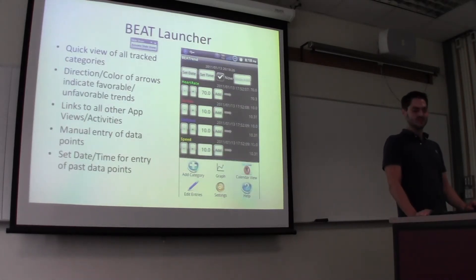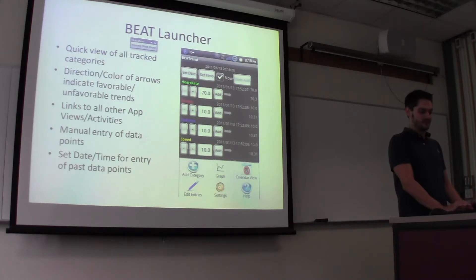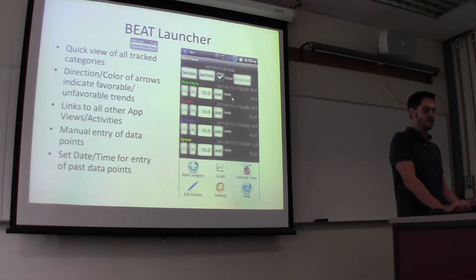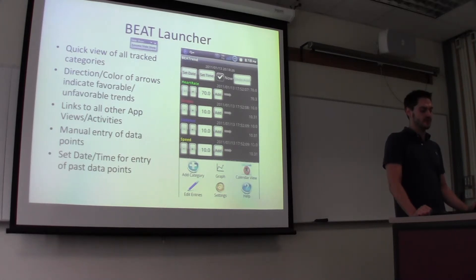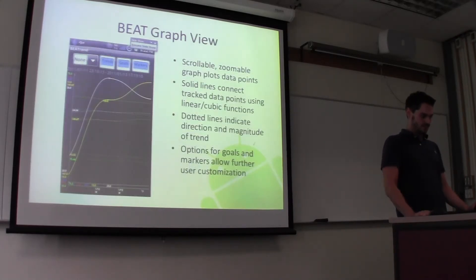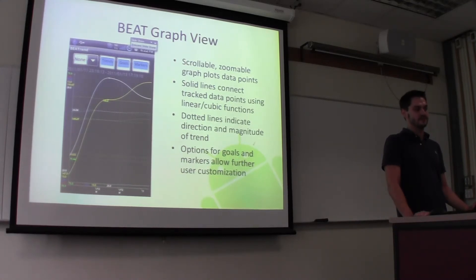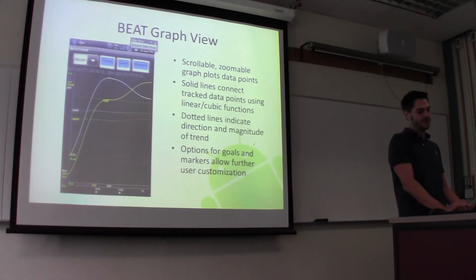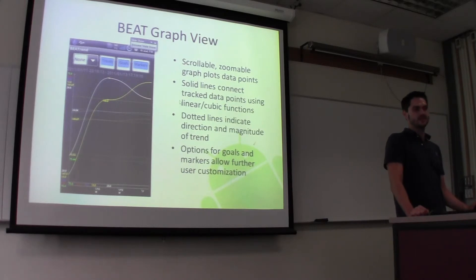Here's a screenshot of how we add different things to the BEAT framework. These arrows here are actually going to show the trend of points as they're being posted along. This also has links to jump to some other apps we're using, like Calendar View for long-term data. And then also some graphs — here's a nice graph of what the BEAT framework can do, looking at longer-term stored data over time periods. It's scrollable, and you can see the dotted lines here that show the direction and magnitude of trend.